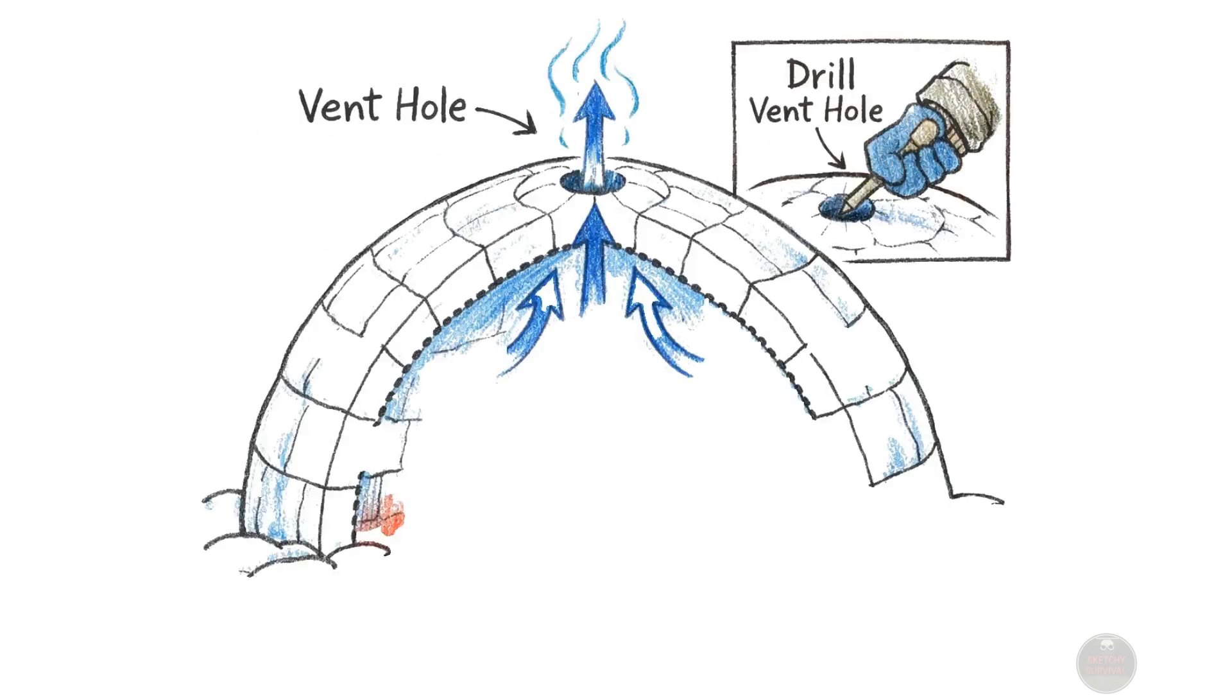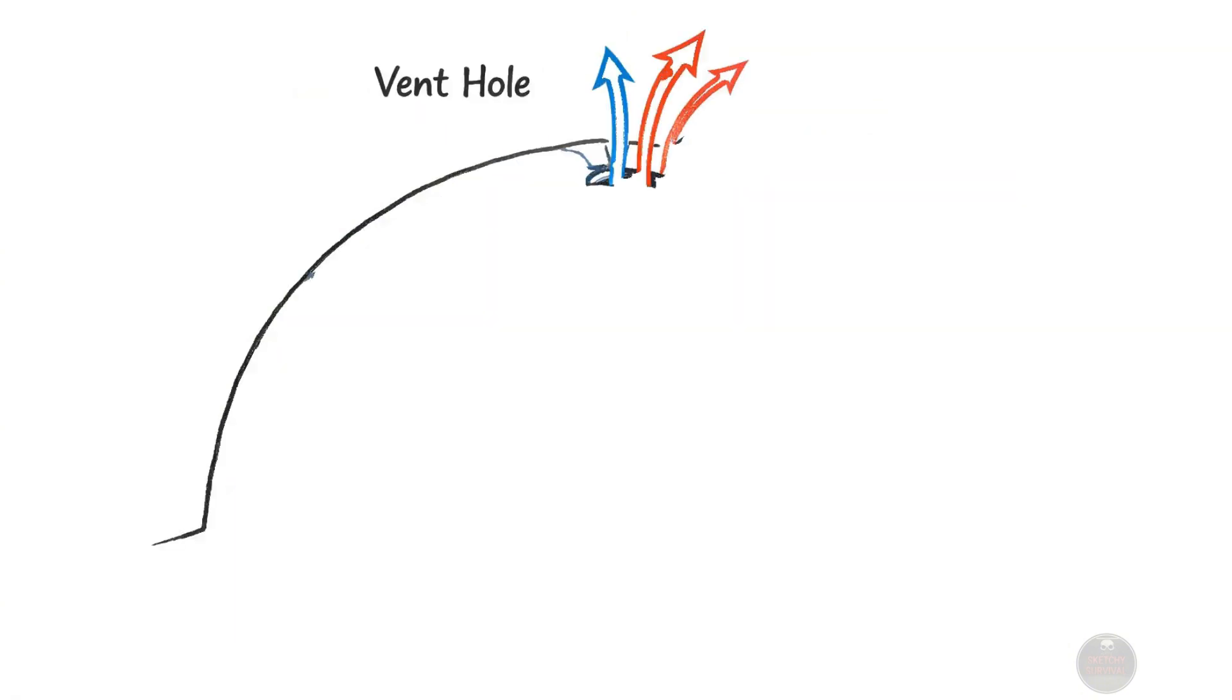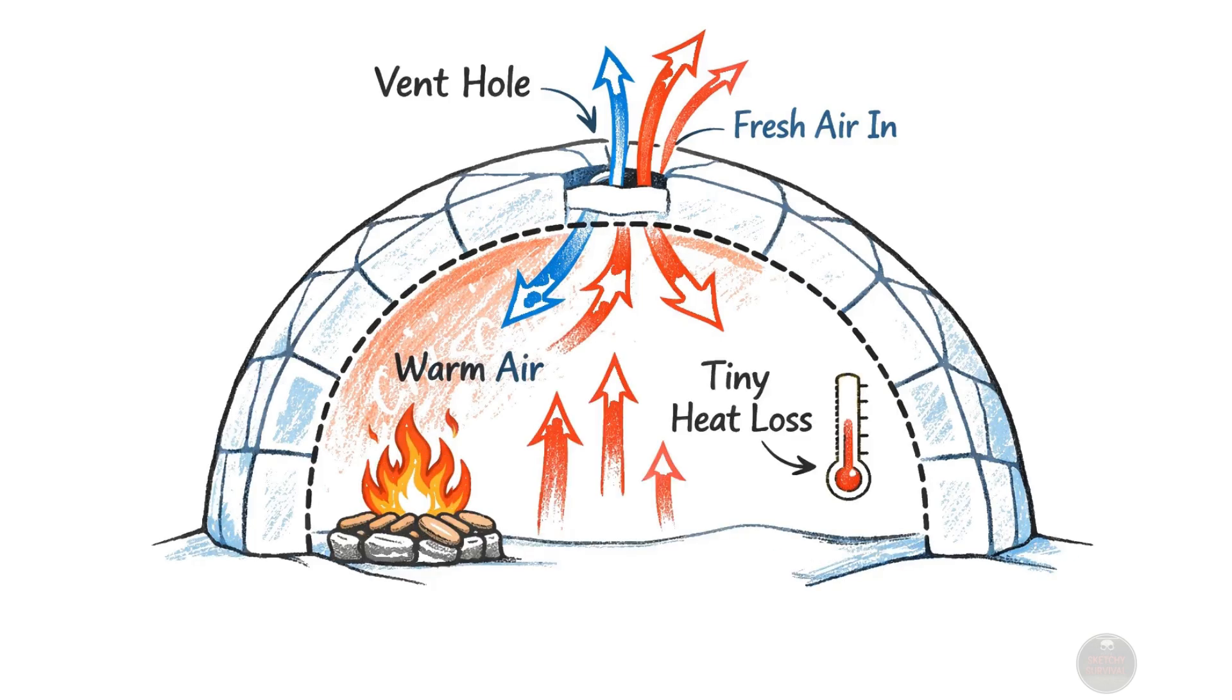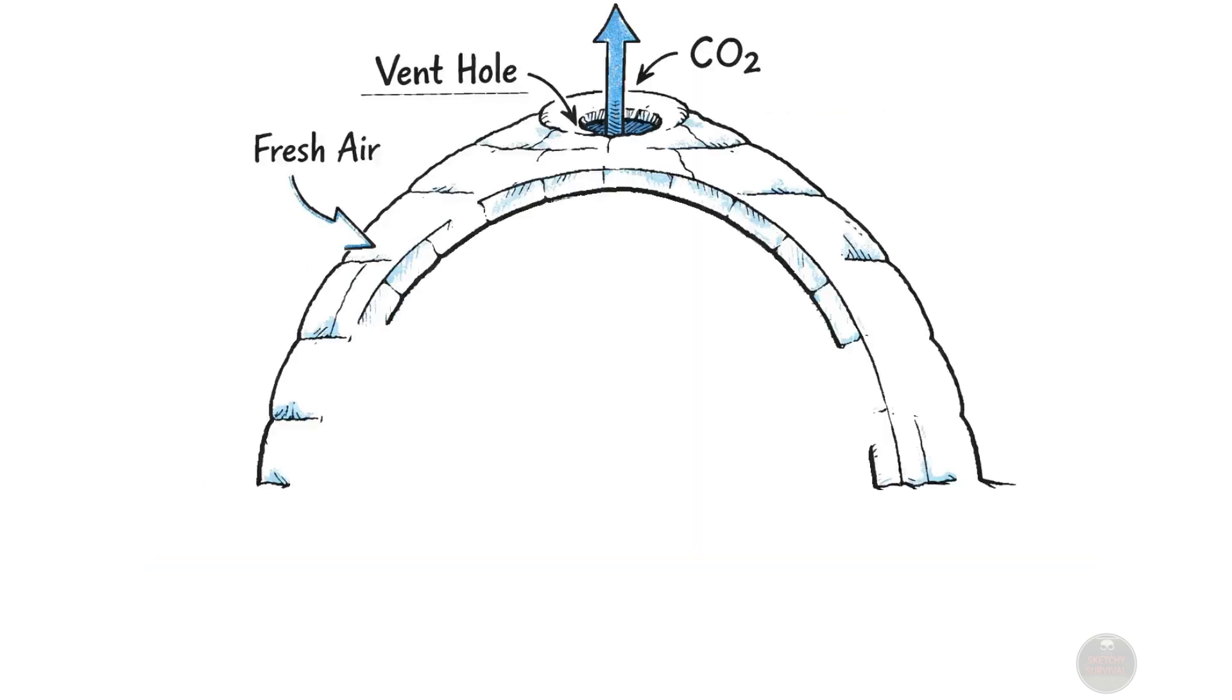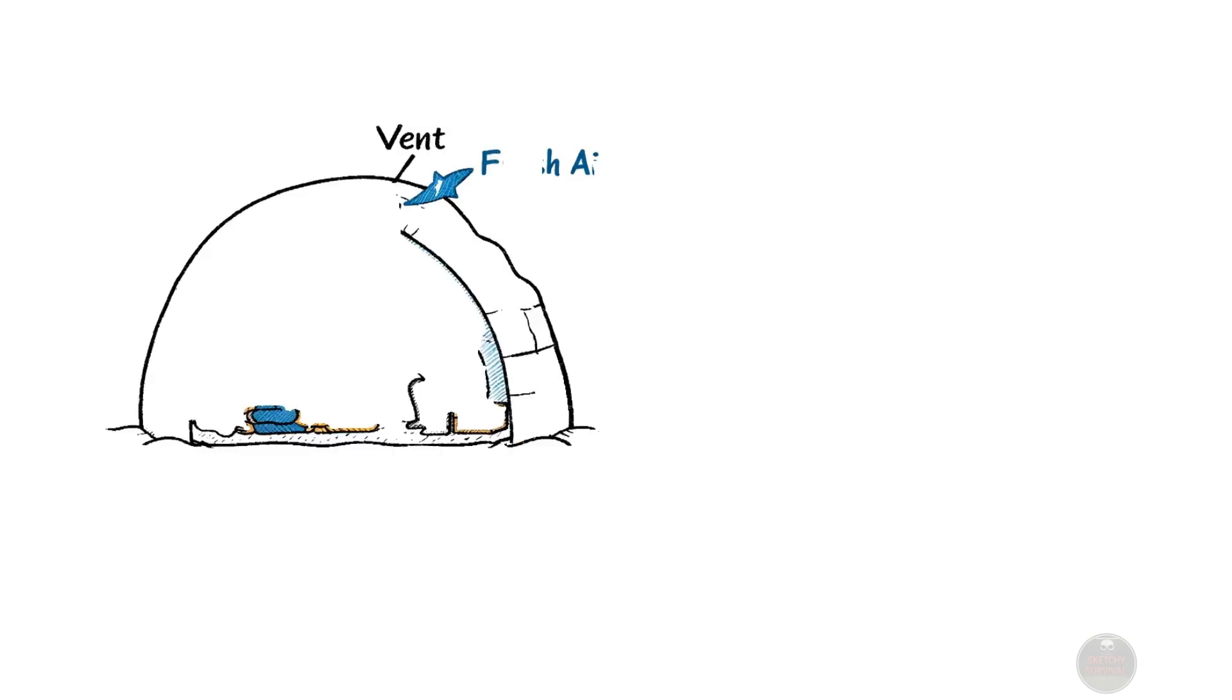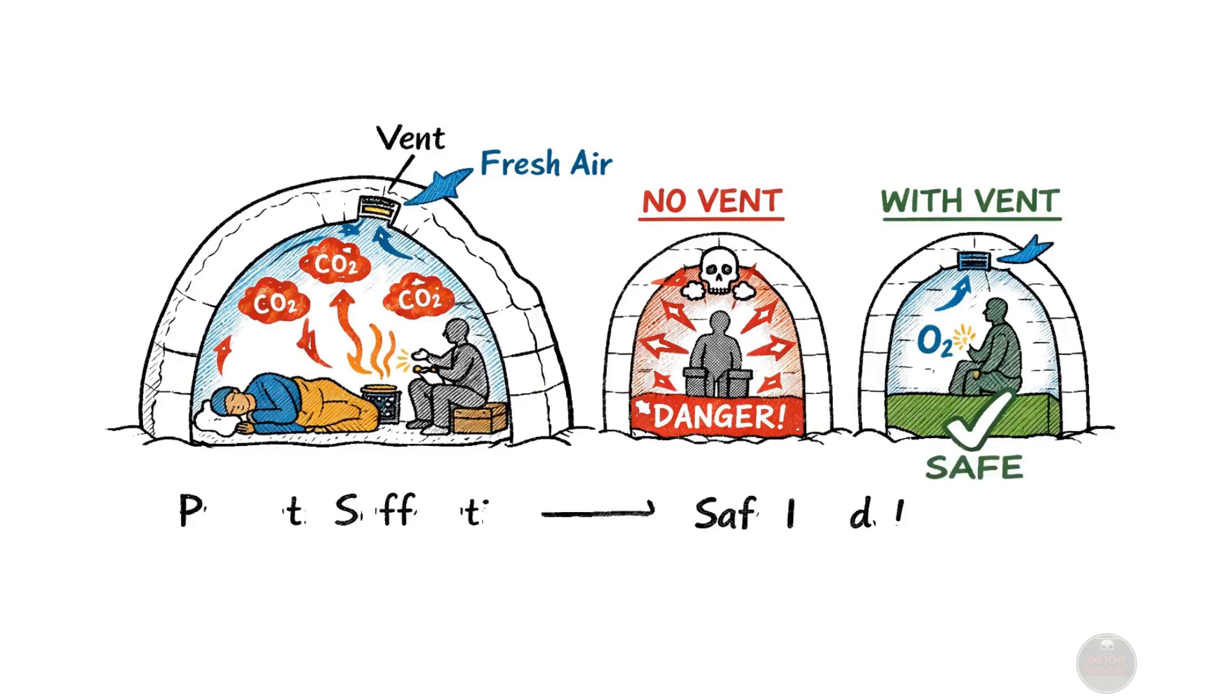Furthermore, constructing a small yet vital ventilation hole near the top of the igloo is absolutely crucial for safety, despite allowing a tiny bit of precious heat to escape. This small opening is vital to prevent the dangerous buildup of carbon dioxide from breathing and cooking, effectively averting the serious risk of suffocation within the enclosed space.